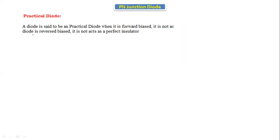A diode is said to be a practical diode when, in forward bias, it does not act as a perfect conductor. Similarly, when the diode is in reverse bias condition, it does not act as a perfect insulator.